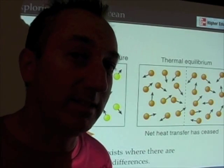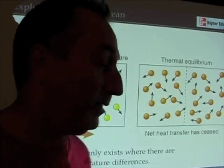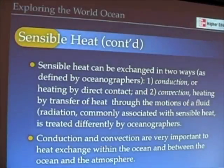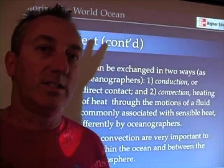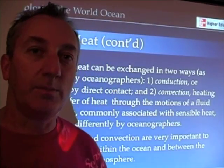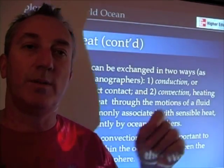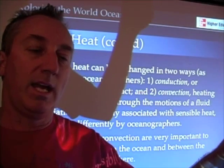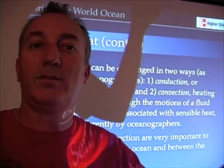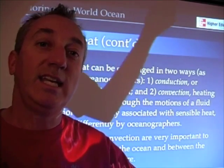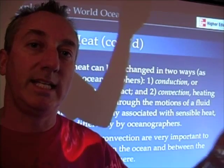It's the physicists that give us these definitions. Sensible heat, which we talk about in relation to specific heat, is heat that we can sense. It's the heat that you and I, when we touch something, know that it's hot or cold. When we put a thermometer in something, we're sensing that heat — that's why it's called sensible heat, heat that we can detect.